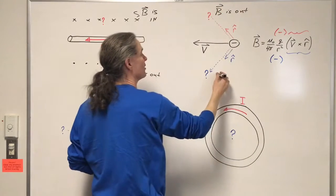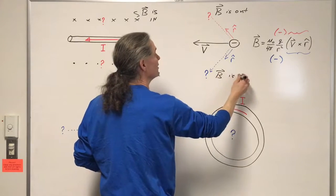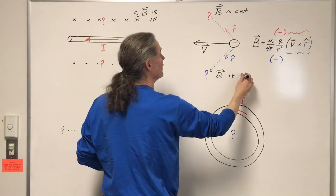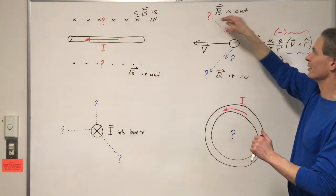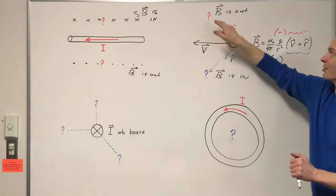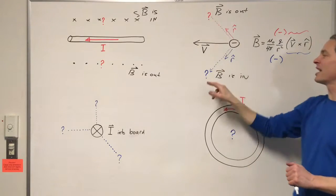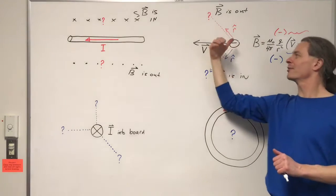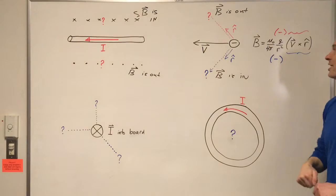And down here the magnetic field is in — everywhere here and here, including those. So up here, magnetic field is out. Down here, wrap the fingers around — magnetic field is in.